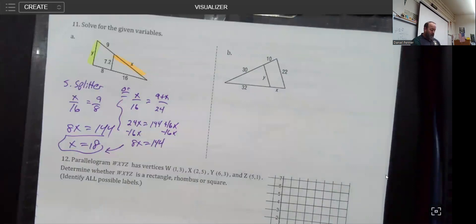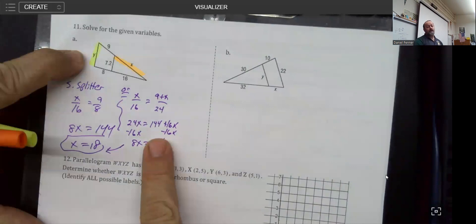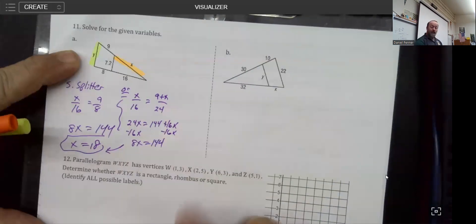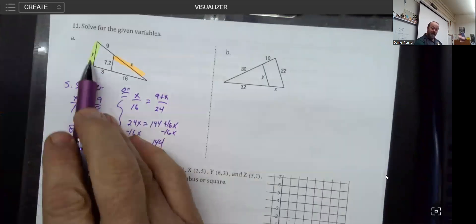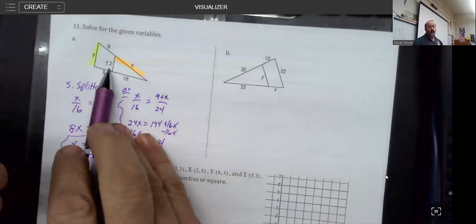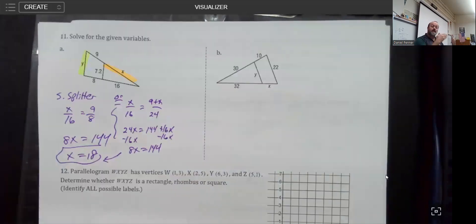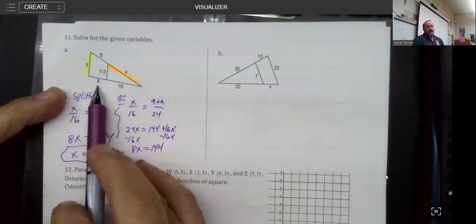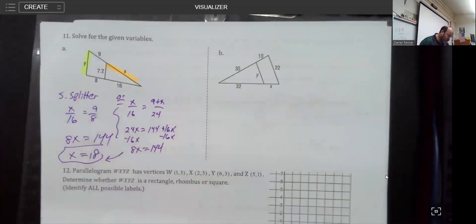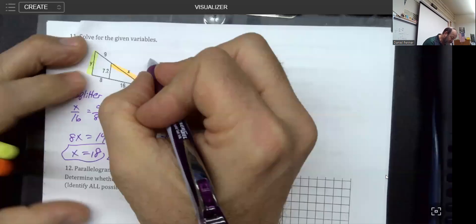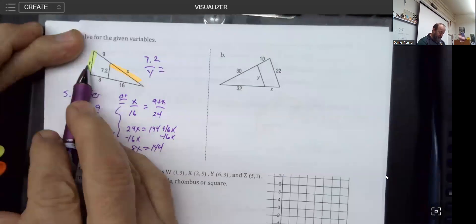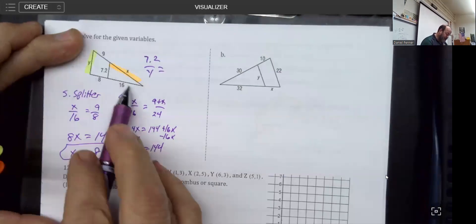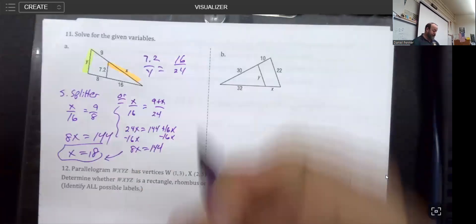When you come to looking at y, your options are much more diminished because y is going to have to be compared to 7.2. Since y is actually an entire side length of a triangle as is 7.2, we're going to have to use entire side lengths to compare all the way throughout. I can never use these little pieces, this 9 or this 8. Those aren't going to be able to be utilized directly.